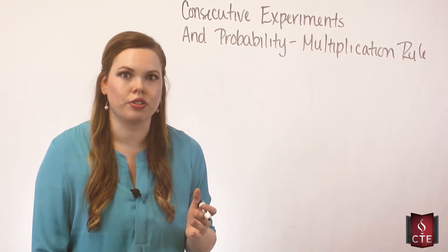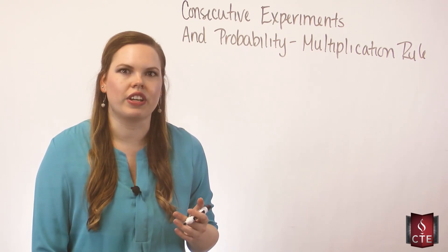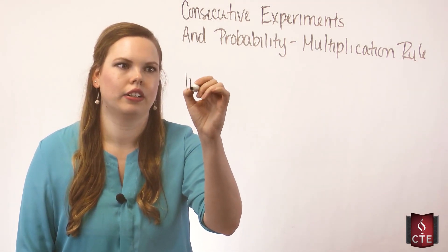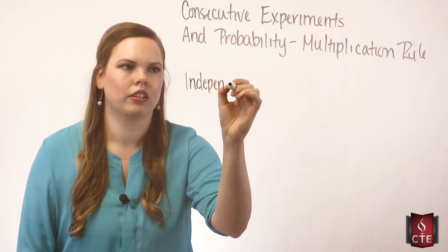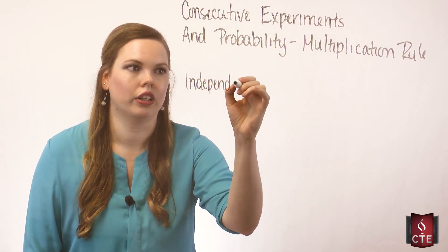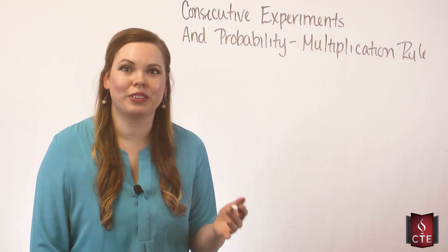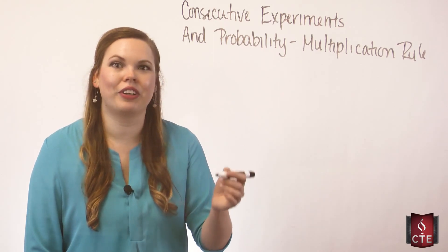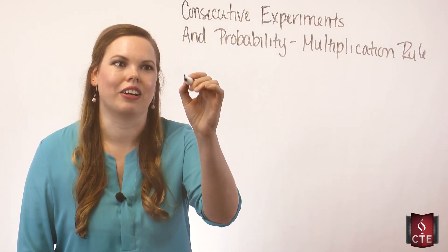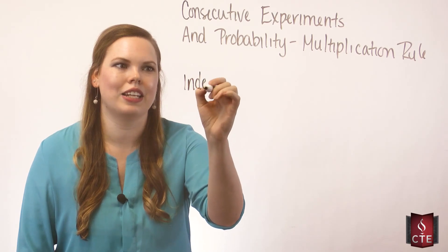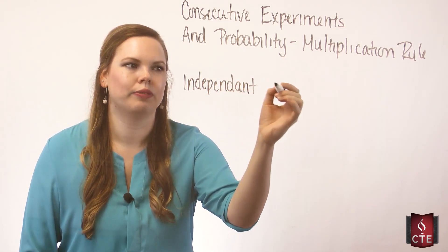There are two multiplication rules. The simpler one is when the two events are independent - or three or four events. The first and simpler rule is the independent multiplication rule.